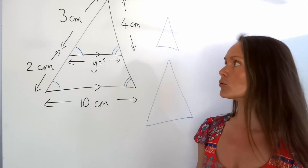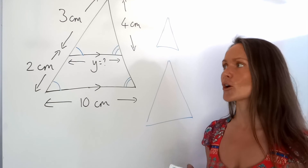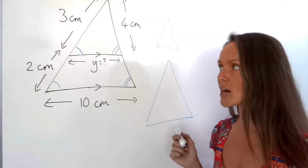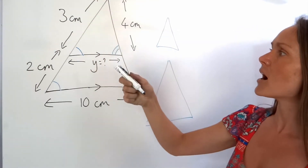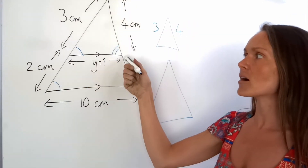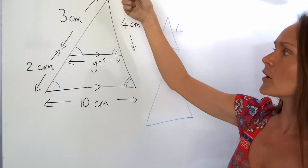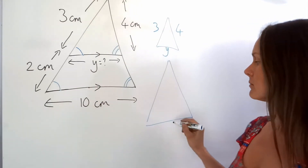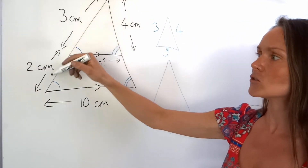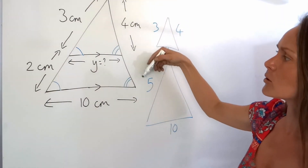I'd advise you to redraw those triangles somewhere to make it clearer when doing your working out. I'm going to label everything I know onto those two diagrams. For the small triangle, I know the sides 3 and 4, and the base is Y — that's what we're trying to work out. On the big triangle, the base is 10. The left side: watch out, because you've got to add 3 and 2 together, so that gives 5. The right side we don't know, so we can't use it.